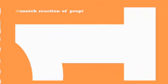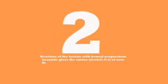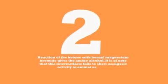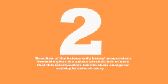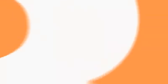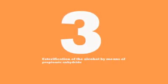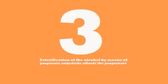Synthesis: the Mannich reaction of propiophenone with formaldehyde and dimethylamine gives the corresponding aminoketone. Reaction of the ketone with benzyl magnesium bromide gives an aminoketone alcohol. It is of note that this intermediate is thought not to show any analgesic activity in animal assay. Esterification of the alcohol by means of propionic anhydride gives the propionate ester.